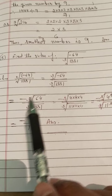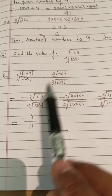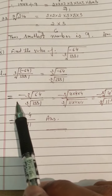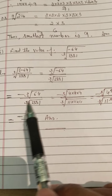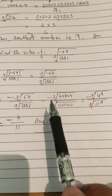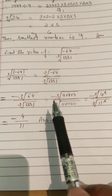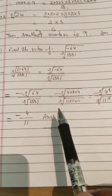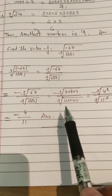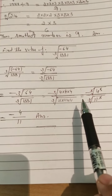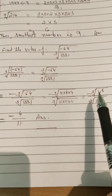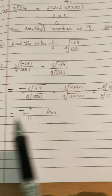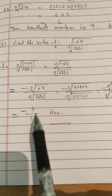Taking the negative sign as common, we get: minus cube root of 64 upon cube root of 1,331. This can be written as: minus, cube root of 4 × 4 × 4 upon cube root of 11 × 11 × 11. This equals cube root of 4 cubed upon cube root of 11 cubed. The cube and cube root cancel, giving minus 4 upon 11.